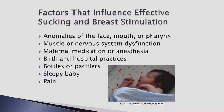Anomalies of the face, mouth, or pharynx — such as cleft lip or palate, high palate, macroglossia (large tongue), micrognathia (recessed jaw), or tongue tie (ankyloglossia) — can make breastfeeding difficult for infants. All of these issues can affect an infant's ability to adequately form a seal to pull the nipple to the back of the throat, leading to inadequate stimulation to the breast and decreased milk transfer.